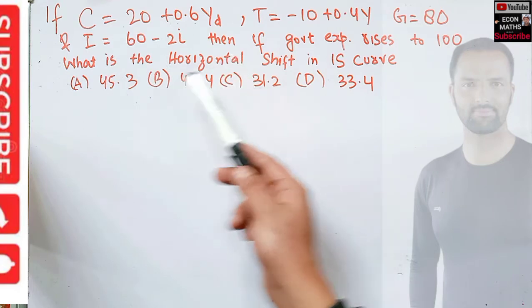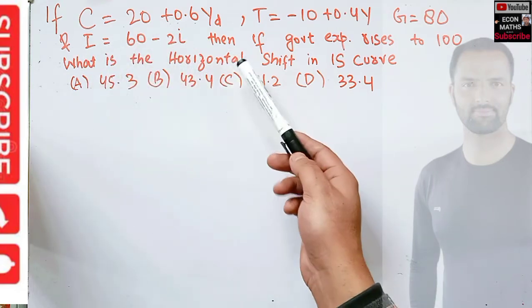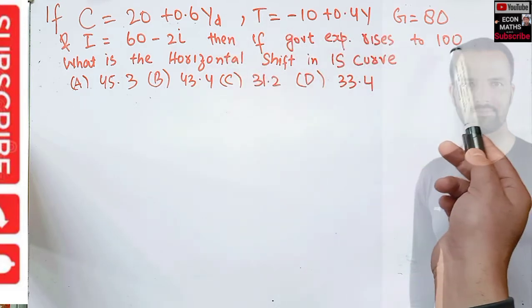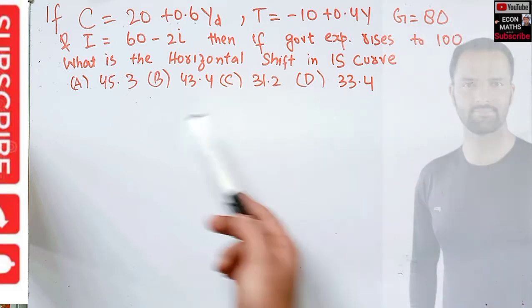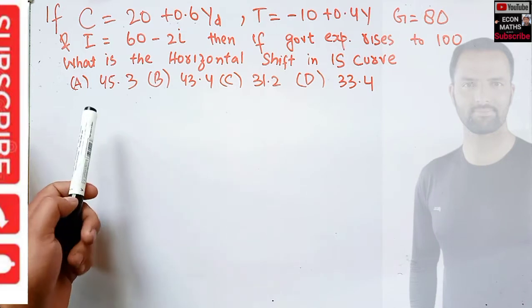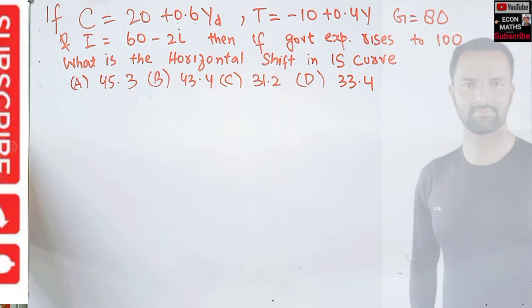We are told that if government expenditure rises to 100, what is the horizontal shift in the IS curve? The options are: (A) 43.5, (B) 42.4, (C) 31.2, or (D) 33.4. Let us see what is the answer.